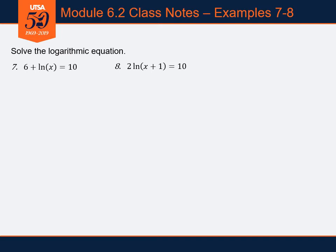In questions 7 and 8 in our module 6.2 class notes, question 7 has 6 plus the natural log of x equals 10. Let me split the page to show my work clearly. Let's solve for x — subtracting 6 on both sides gives us the natural log of x equals 4. Now, how do I get x out of the logarithm?